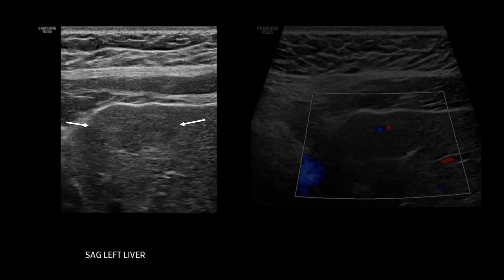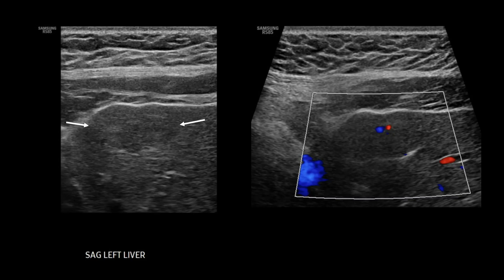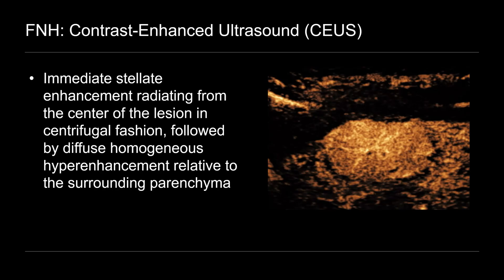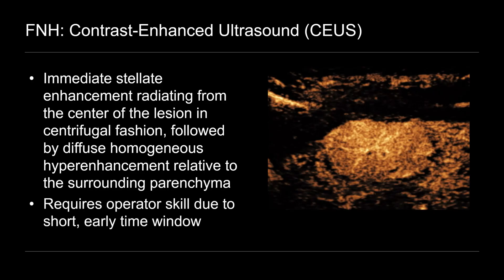So let's now take a look at how contrast ultrasound can help us make the diagnosis of FNH. This was a different patient, a female in her 30s, that presented with an incidental subcapsular left hepatic mass identified on ultrasound. It's rather subtle, slightly hypoechoic relative to the surrounding hepatic parenchyma. On color Doppler imaging, there is some mild internal vascular flow within the central aspect of the lesion. So what we're looking for on contrast-enhanced ultrasound in order to make the diagnosis of FNH is a pattern of immediate stellate enhancement radiating from the center of the lesion outward in centrifugal fashion, followed by diffuse homogeneous hyper-enhancement relative to the surrounding liver parenchyma. And to identify this stellate or spokewheel enhancement, it does require some operator skill due to the short, relatively early time window, as you'll see.